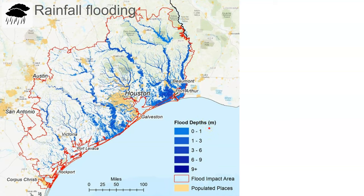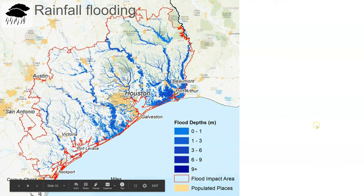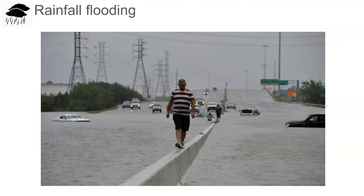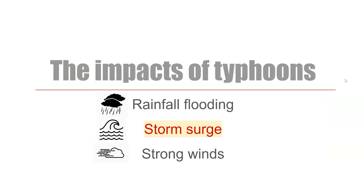Now we're into meters — a slightly more impressive unit. My classroom is about three meters high, so nine meters is the floor below me, my classroom, and the floor above me. That's how much flooding. You can imagine the devastation to housing and people. Here's a photograph — the flood water has submerged cars and damaged infrastructure. I just hope that guy has got some sure footing as he walks along.